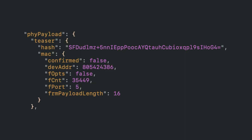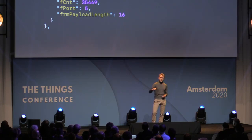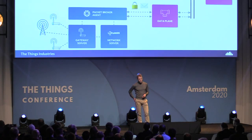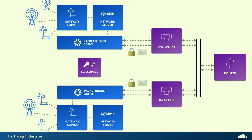Here's what a header looks like in Packet Broker. It contains a teaser — not the physical payload itself, but a description of what's in the message: the device address, whether there are frame options, the frame counter, frame port, frame payload length, whether it's confirmed, and a hash of the physical payload. With this, the home network can determine in real time whether it already received this message with the same hash on its own gateways, and if not, find a way to decrypt it.